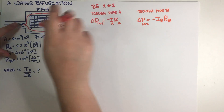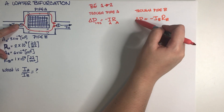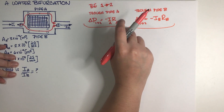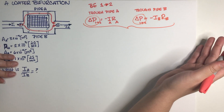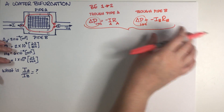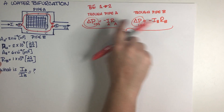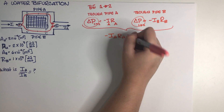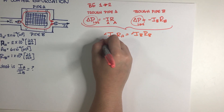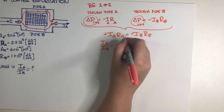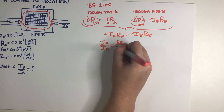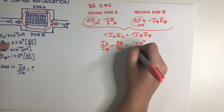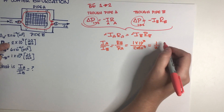In both cases — whether you went up or down — you're analyzing the same ΔP (pressure at point 2 minus pressure at point 1). Since it's a state function, it doesn't matter which path you took, as long as it's a valid path. Combining the two equations, the negatives cancel, giving I_A·R_A = I_B·R_B, so I_A/I_B = R_B/R_A = (1×10⁷)/(2×10⁷) = 1/2.